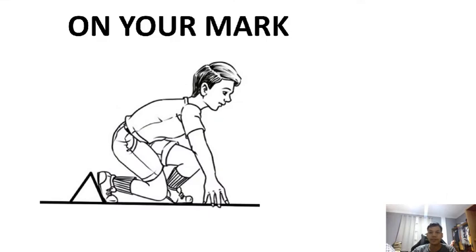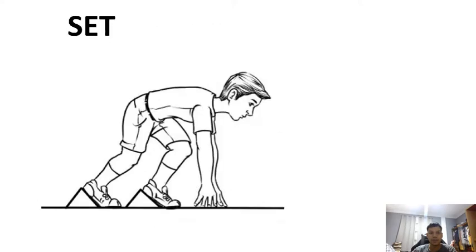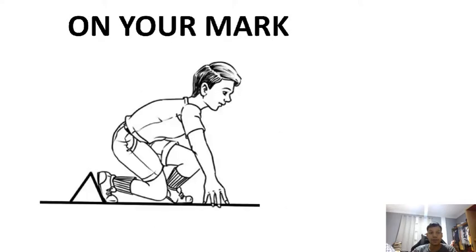There are three important steps: on your mark, set, and go. We will discuss first on your mark. The strategy on this running position is to crouch on one knee. You need to observe the position of the knee.